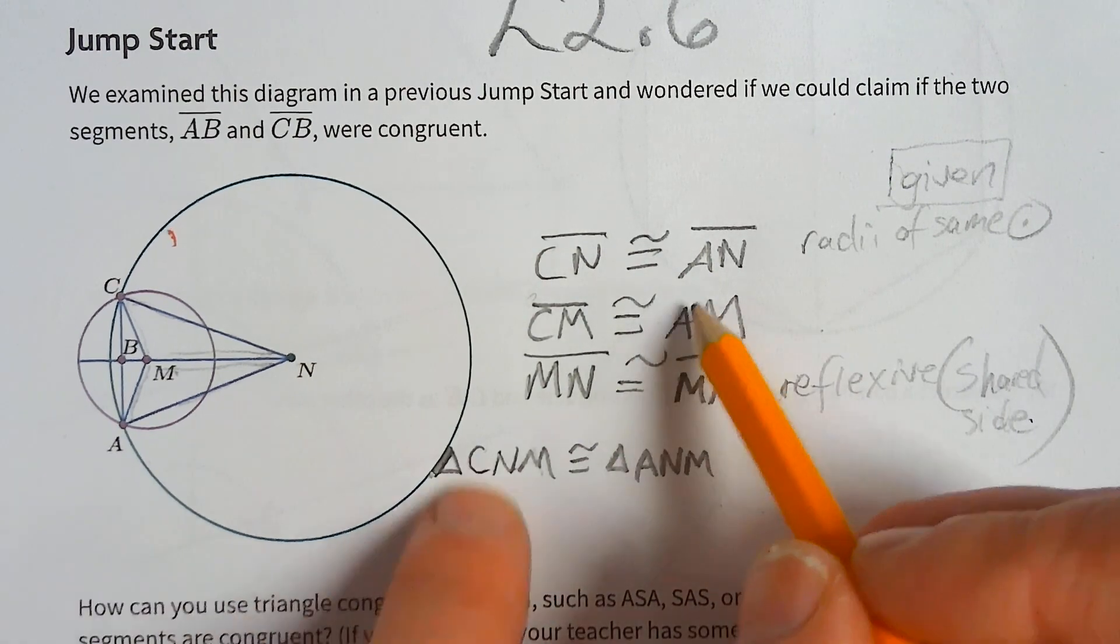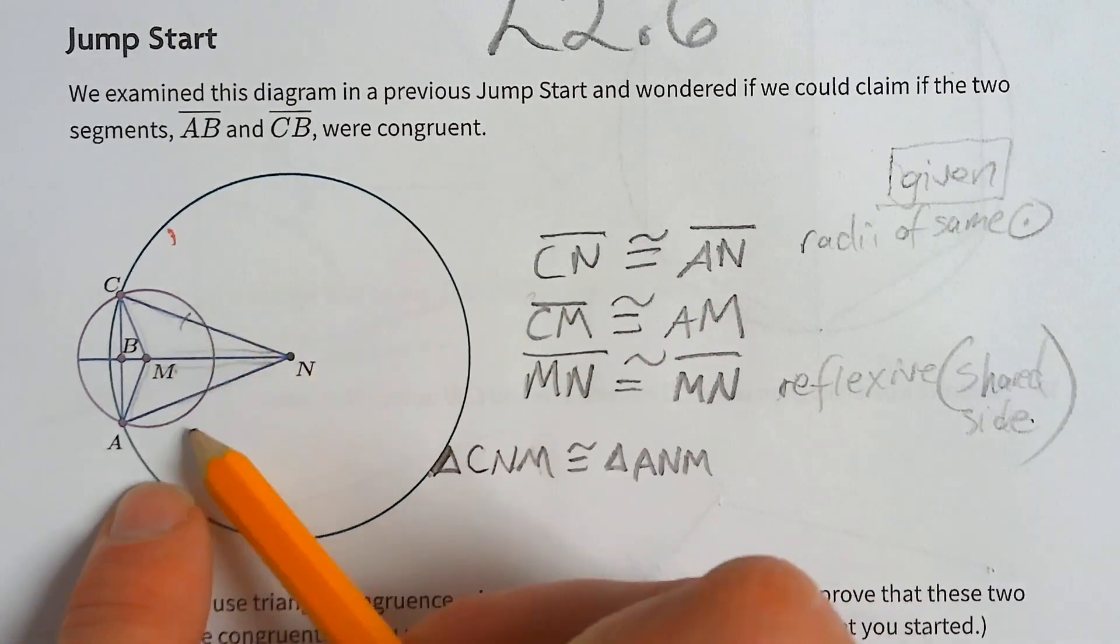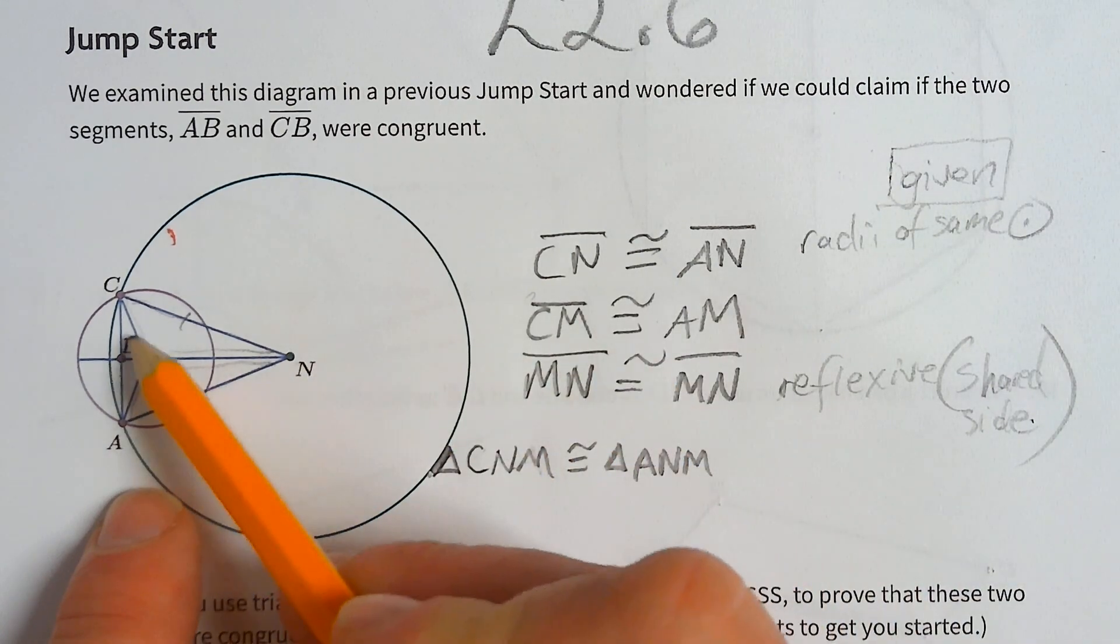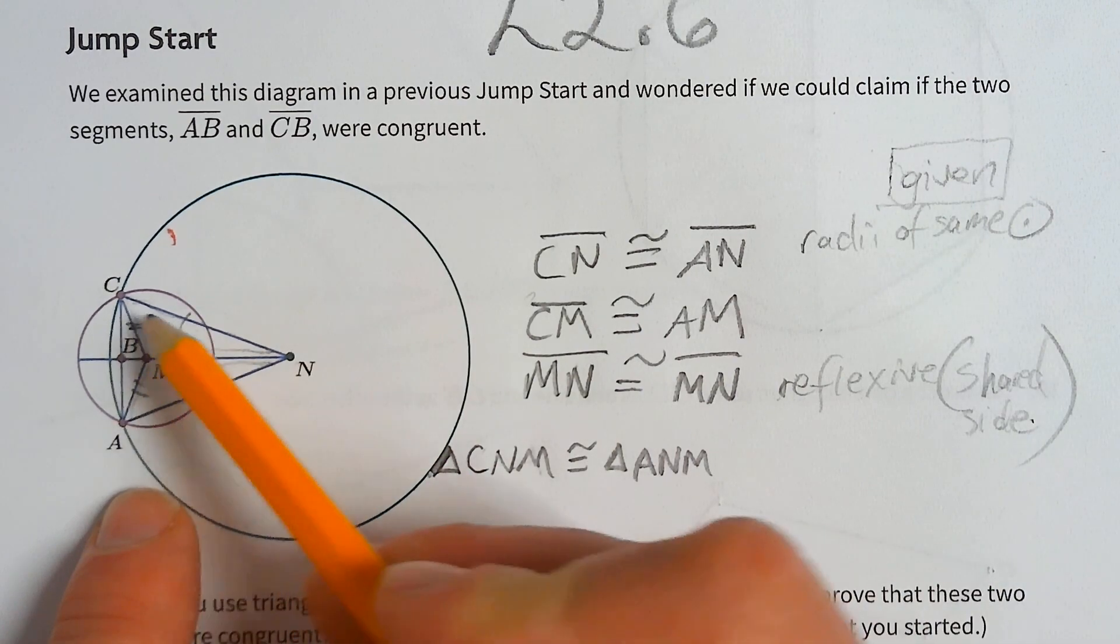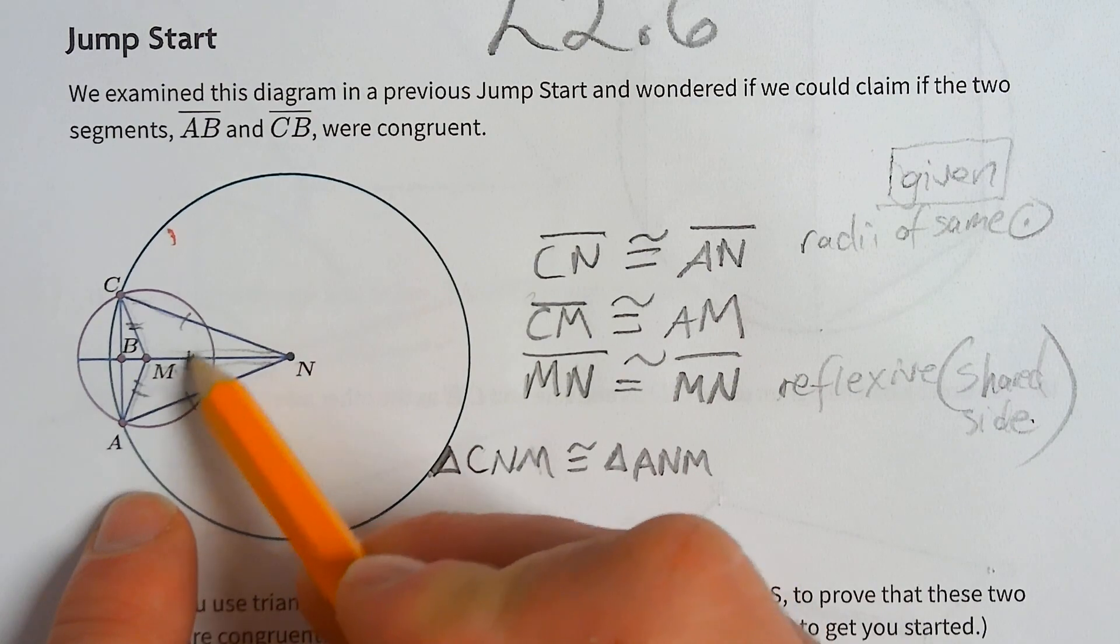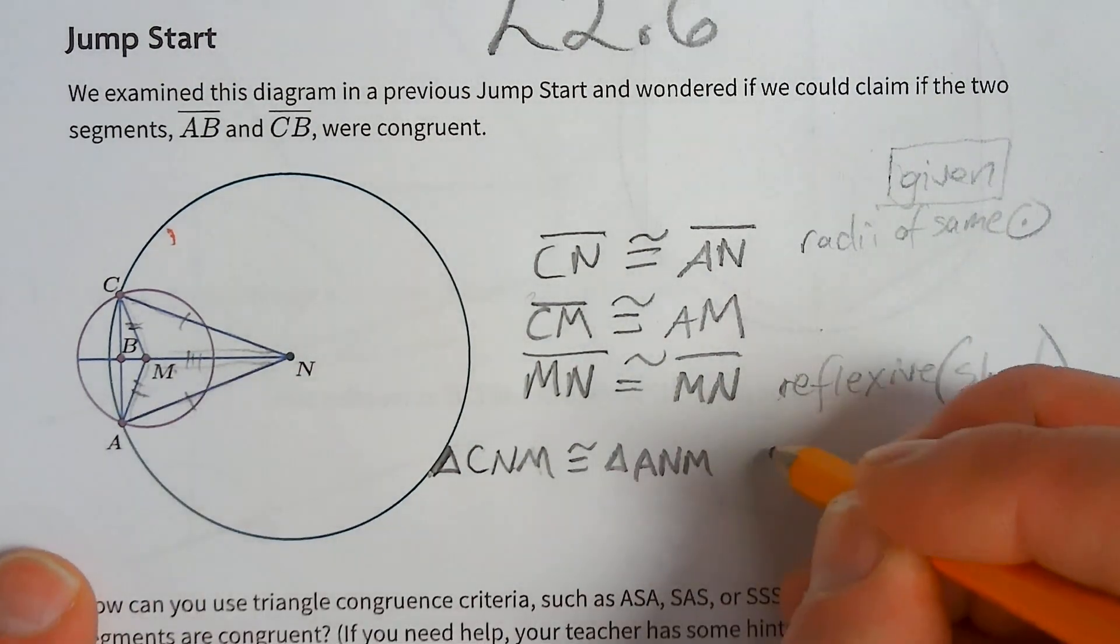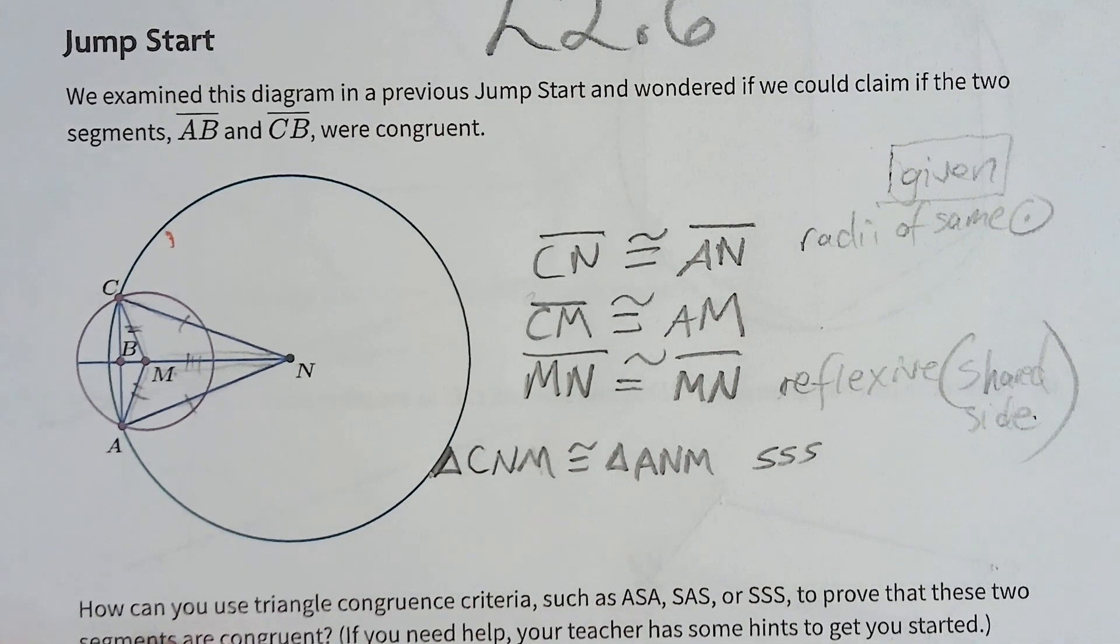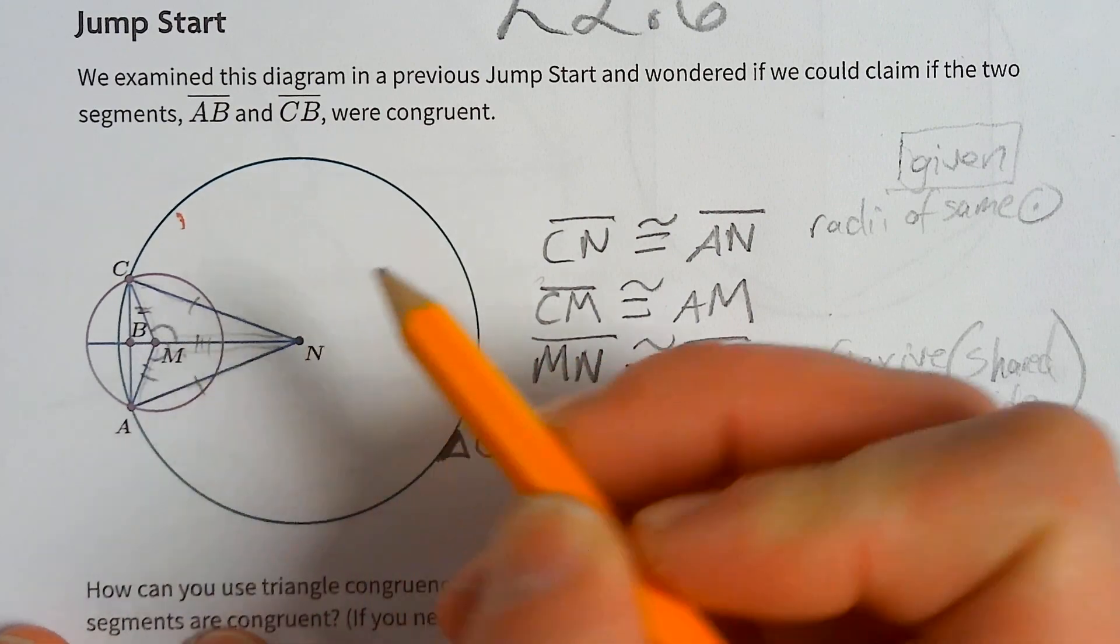Don't take my word for it. Do we actually know these two are congruent by side side side? Well, CN and AN, CM and AM, and these are different lines, and reflexive. So there it is, side side side.